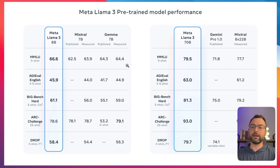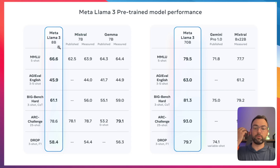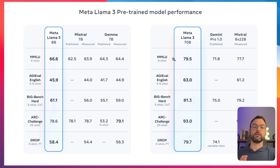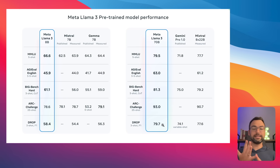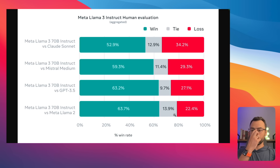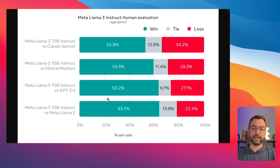Comparing Llama 3 to other models: the 8 billion parameter model basically wins on pretty much every benchmark compared to Mistral and Gemma. The 70 billion parameter model is also right up there, winning on almost every front compared to Claude, Mistral, and everything else. This is probably my new favorite LLM for testing, troubleshooting production apps, and finding free and fast alternatives to ChatGPT.